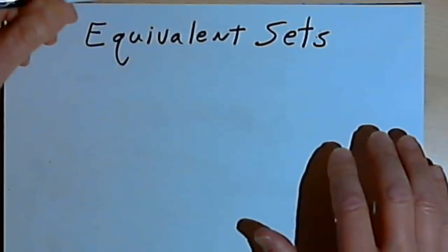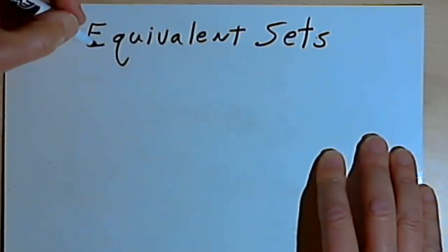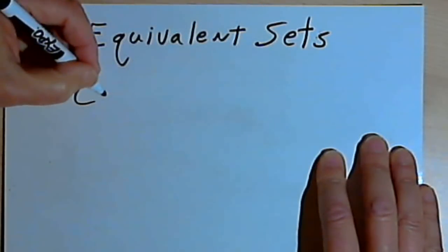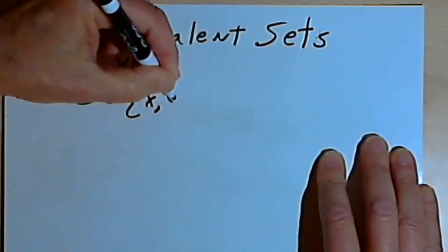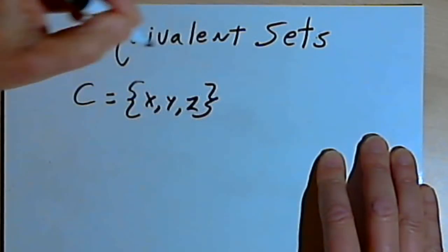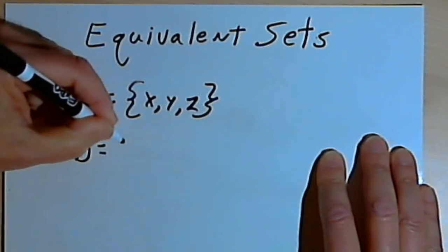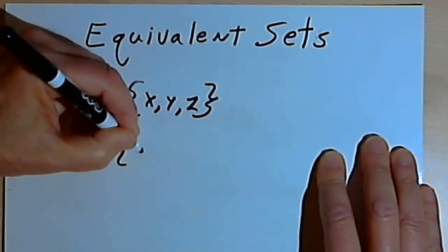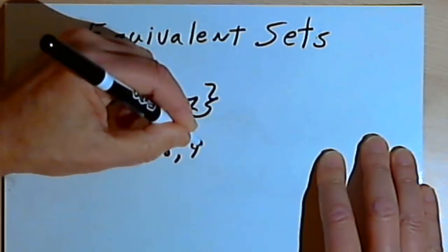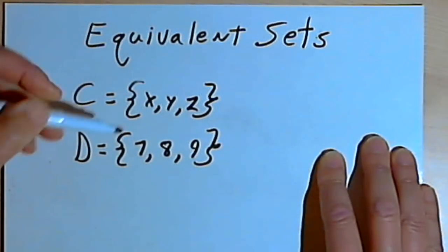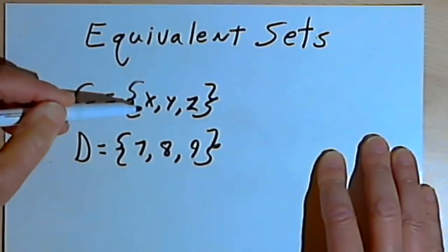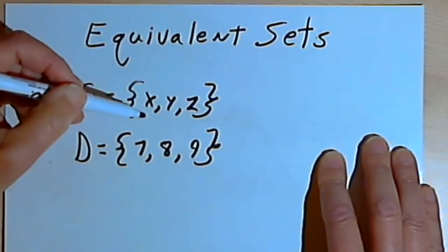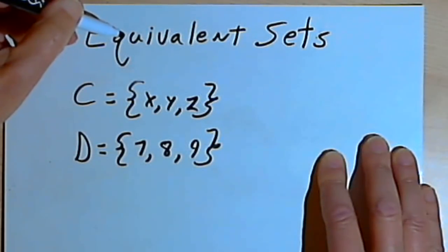Now, don't confuse that with equivalent sets. So let's say I have set C, and set C consists of X, Y, and Z. And I have set D, and set D consists of the numbers 7, 8, and 9. Now, these are not equal sets — they have totally different elements in them. But they do have the same number of elements; both of them have three elements. If that's the case, we can say that these sets are equivalent sets.